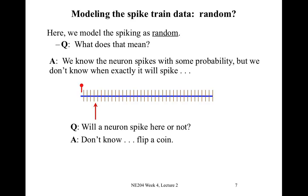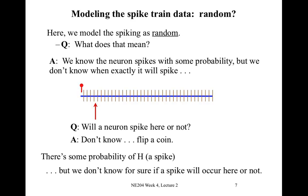The true answer is we don't know if the neuron is going to spike in that bin. To answer that, we have to flip our coin and see what happens. There's some probability that when we flip our coin we get an H, which represents a spike, but we won't know for sure until we flip that coin. In that sense, neuron spiking is random — we have some probability of a spike, but we don't know when or if a spike will occur.